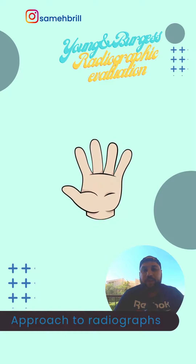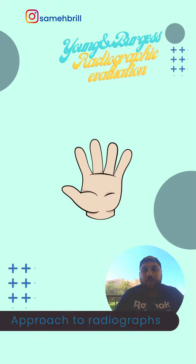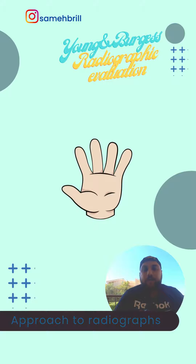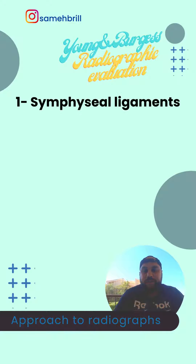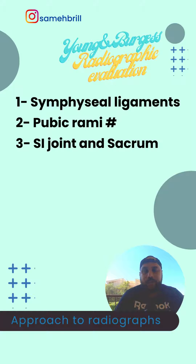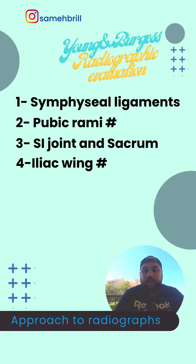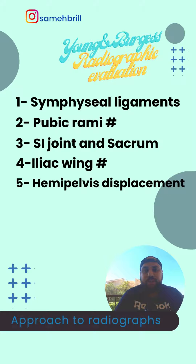I have five major points to keep in mind in order not to miss any fractures on the x-rays. Number one, I'll go for the symphysial ligaments, then the pubic rami, then the sacroiliac joint and the sacrum to see if there is any disruption or sacral fractures present. Then I'll go to the iliac wing, and finally the hemipelvis to see if there is any displacement.